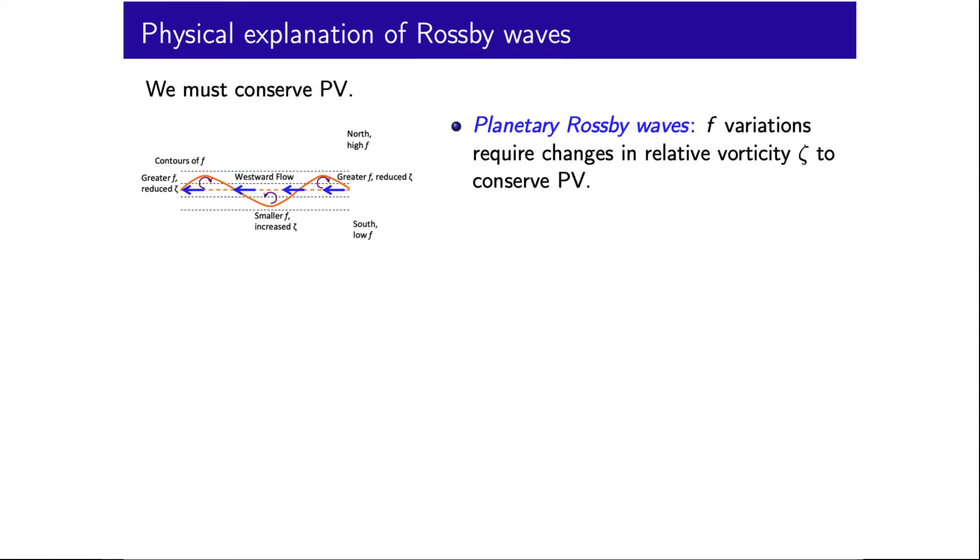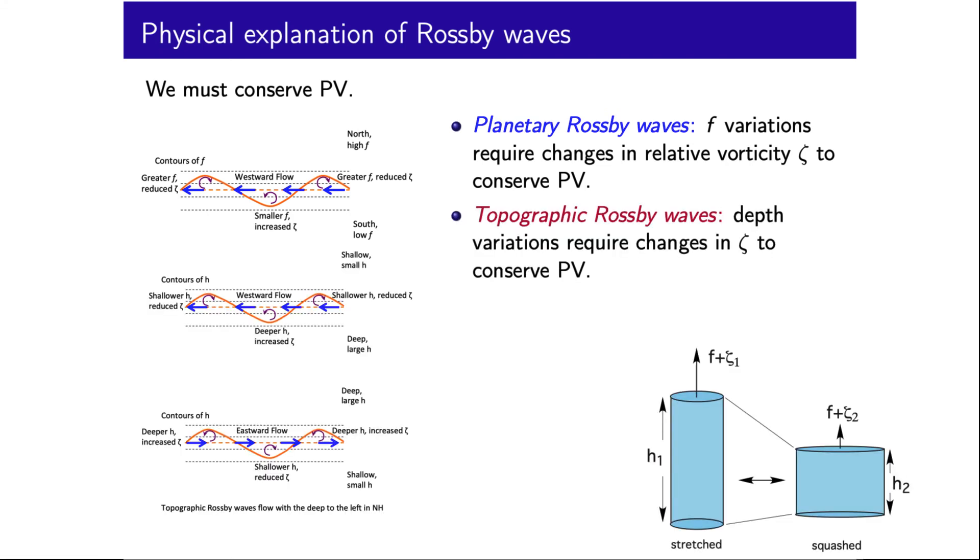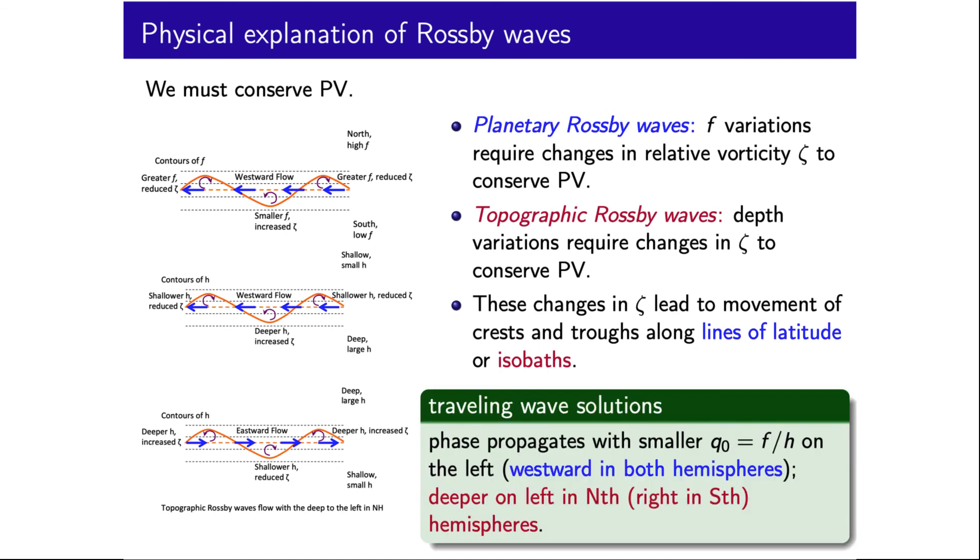To briefly summarize this, we have seen that planetary and topographic Rossby waves arise as a result of conserving potential vorticity. Planetary Rossby waves result from perturbations in a domain with a gradient of f. Both lead to changes in ζ, generating wave-like motions along lines of constant latitude or isobaths. Both have phase propagation with smaller f on H to their left. For planetary waves, this is westward. And for topographic waves, this is with the deeper waters on the left in the northern hemisphere and deeper waters on their right in the southern hemisphere.